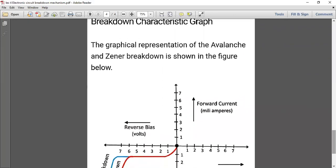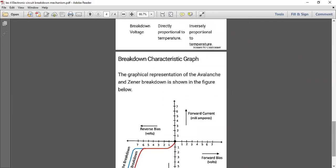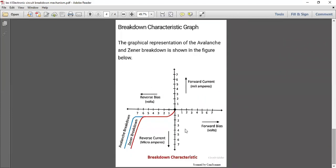There is a graph also - graphical representation. So this is the graphical representation of both the breakdowns. As we see, the breakdown will occur only in reverse condition, as you see in the diagram. This is the zener breakdown and this is the avalanche. We can say also that in zener breakdown there is a very sharp cut, but here we are showing it in a gradual way.